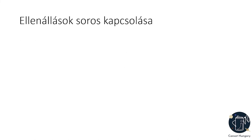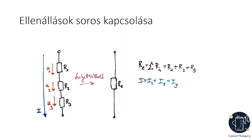Az ellenállásokat sorosan és párhuzamosan is kapcsolhatjuk. Legyen adott három darab ellenállásunk R1, R2 és R3. Soros kapcsolásnál a három ellenállás helyettesíthető egy darab eredő ellenállással. Az eredő ellenállás értéke megegyezik a sorosan kapcsolt ellenállások összegével: R_eredő = R1 + R2 + R3. Általánosan n darab sorosan kapcsolt ellenállás eredőjét megkapjuk, ha az n darab ellenállást összeadjuk. Tehát hogyha az áramkör ellenállását növelni akarjuk, sorosan kell beiktatnunk ellenállásokat.